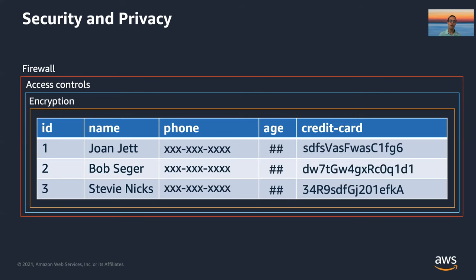Data privacy ensures that customers' sensitive information is always protected, even when security is breached and data is stolen. To protect that data, we choose to mask, obfuscate, or tokenize some of the sensitive fields when they're ingested directly into the data lake. So when they're stored, they're already obfuscated, masked, and tokenized. They may only be de-tokenized or de-masked if the user has the proper permission to see that information. Many times users don't need to see it — it may be an application processing a credit card request that needs to see that detail, but a user should never see it.